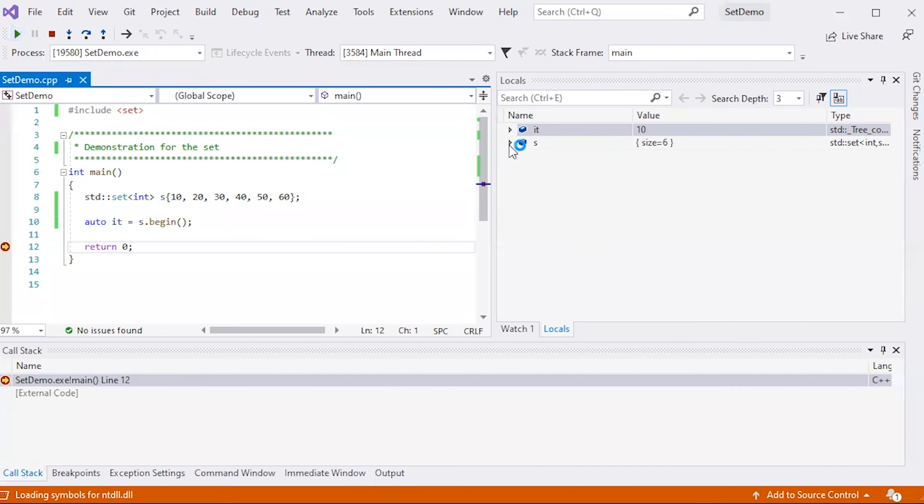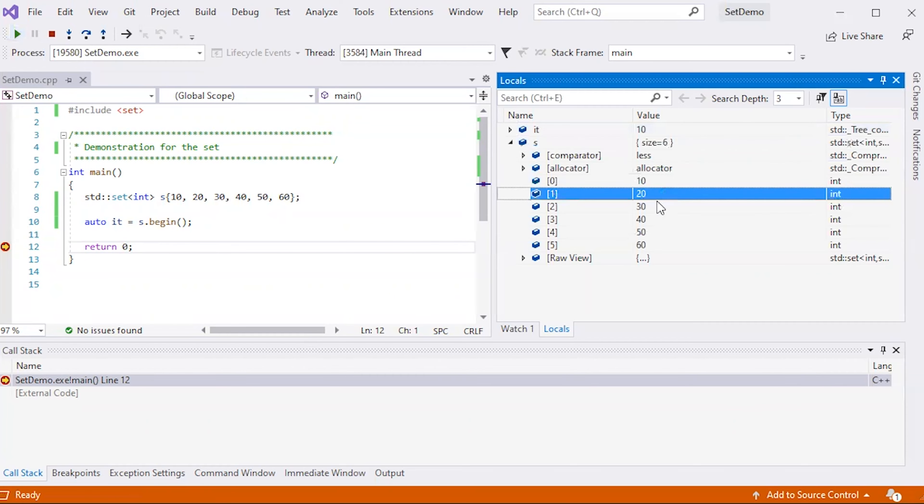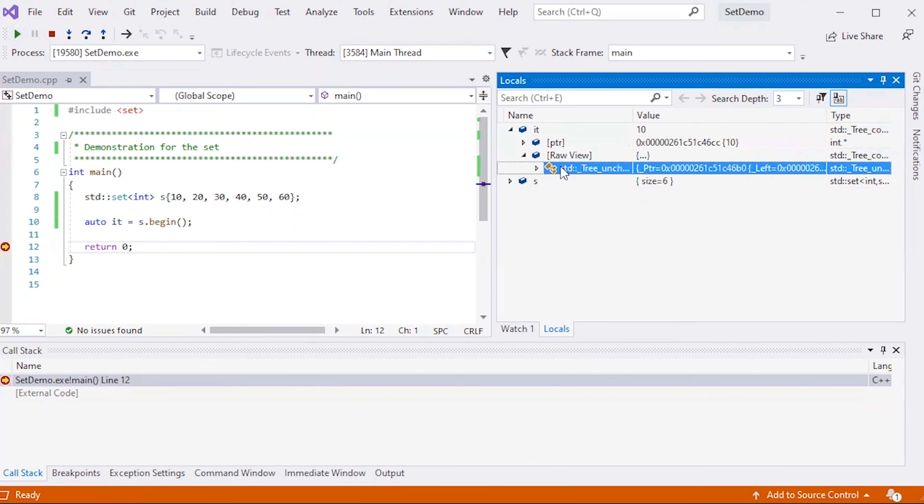And notice I have my set here, and I have all the elements in sorted order. And then, if we look into the raw view, we're going to see that weird element tree. This is a binary search tree. We can also take a look in the iterator, and the iterator also has a pointer to the element, and there's the element itself. And this also is a pointer to a node in a binary search tree.